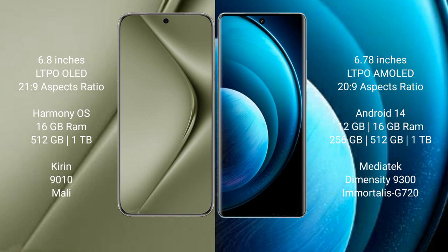The Huawei Pura 70 Ultra runs on the HarmonyOS operating system, while the Vivo X100 Pro runs on the Android 14 operating system.